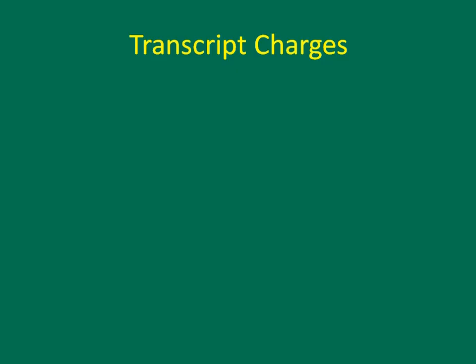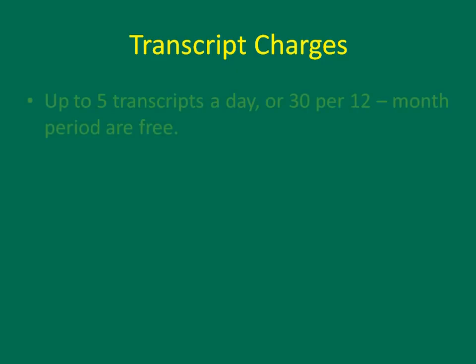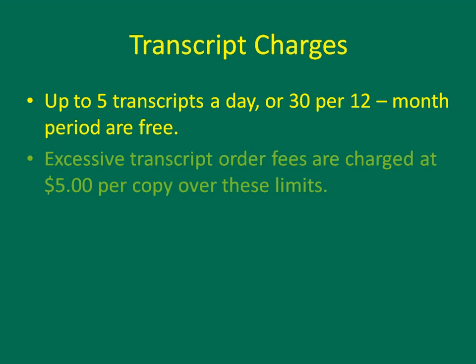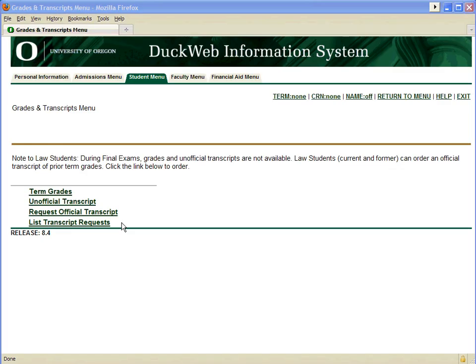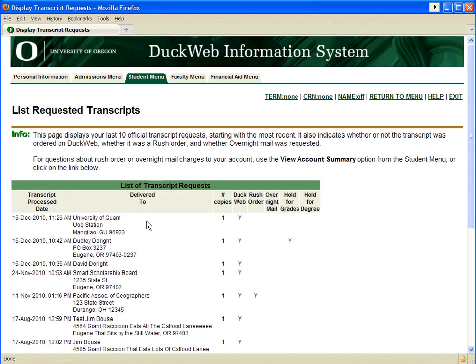Unless you've chosen rush or overnight options, your transcript order will be free, up to 5 transcripts a day and 30 per 12-month period. If you exceed these numbers, an excessive transcript order fee will be charged in the amount of $5 per copy for every copy ordered over these limits. Rush and overnight fees will also be charged. You can check how many transcripts you've ordered and when by clicking on List Transcript Requests from the Grades and Transcripts menu.